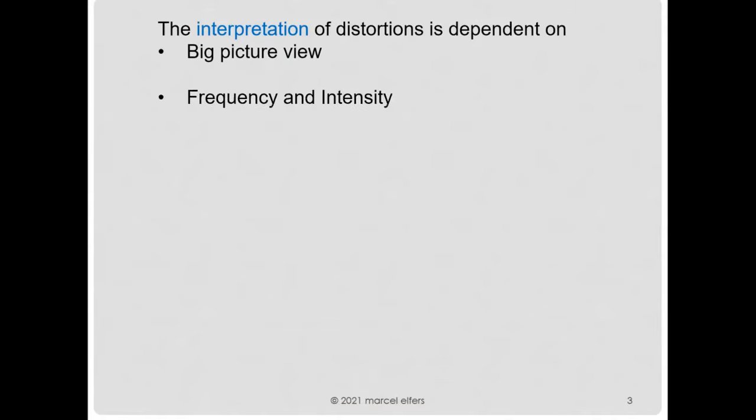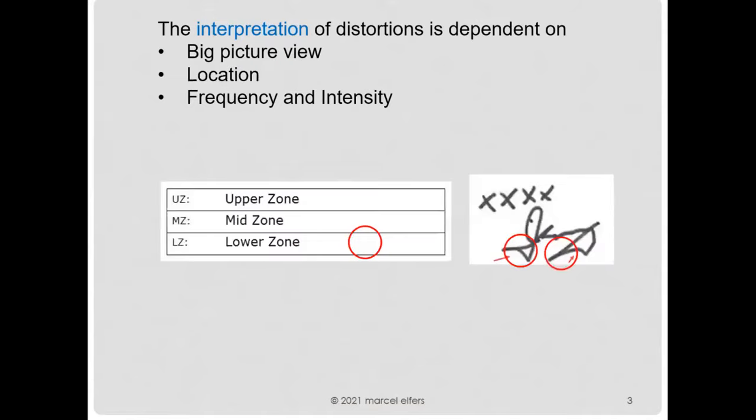The interpretation of distortions in handwriting is dependent on the big picture view first and foremost. Then we look at frequency and intensity, which is what we're going to talk about today. And lastly, where the distortions occur — in the upper zone, mid zone, or lower zone.